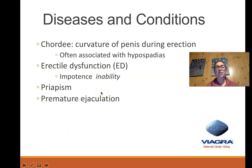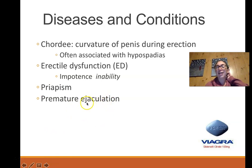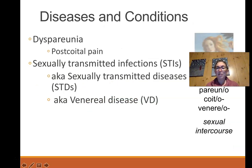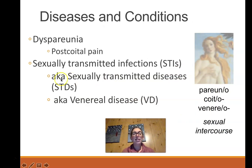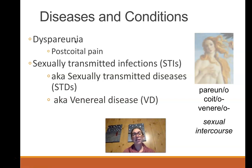Premature ejaculation is ejaculating before penetration of the female. Evolutionarily, the purpose of sexual intercourse is to fertilize the egg, so if a male cannot hold off ejaculating inside the female to achieve fertilization, that is known as premature ejaculation. Dyspareunia means a condition of abnormal or painful intercourse — pareuno is a combining form that means intercourse. Pain during intercourse is not so much a condition as it is a symptom of other conditions, including STIs.